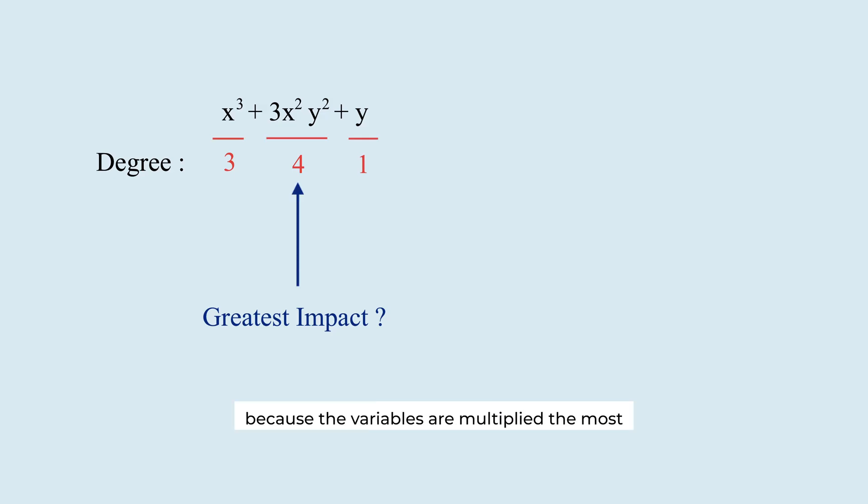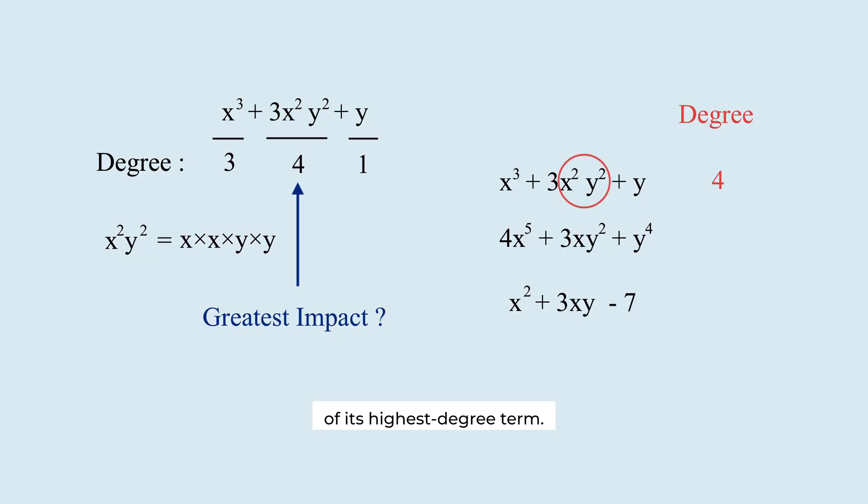It's this term, because the variables are multiplied the most. So the degree of a polynomial is defined as the degree of its highest degree term.